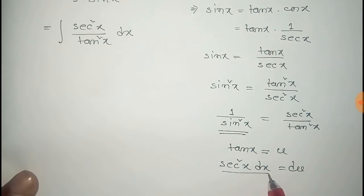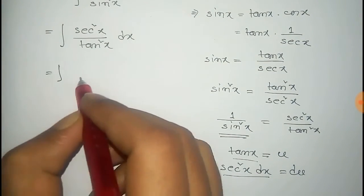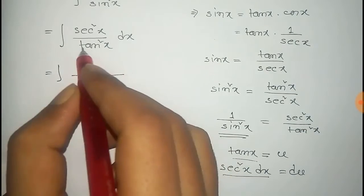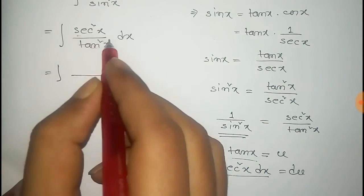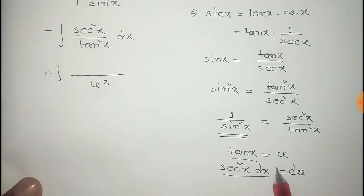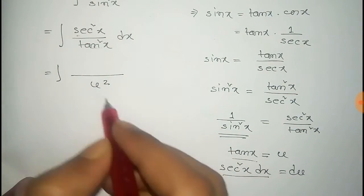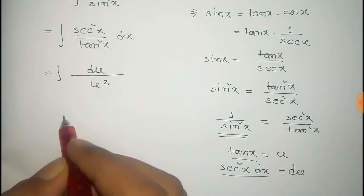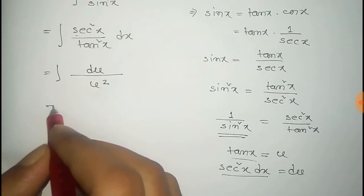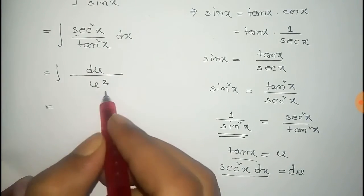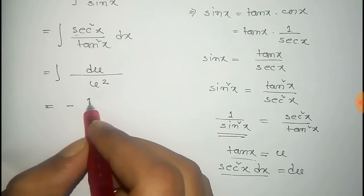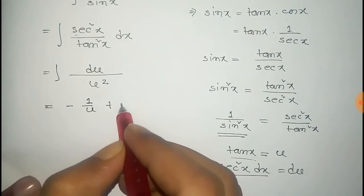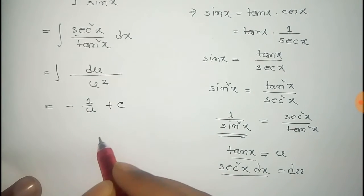Now put the value of sec squared x dx and tan x in the integral. So tan squared x equals u squared and sec squared x dx equals du. Now the integral of du by u squared is minus 1 by u plus constant c.